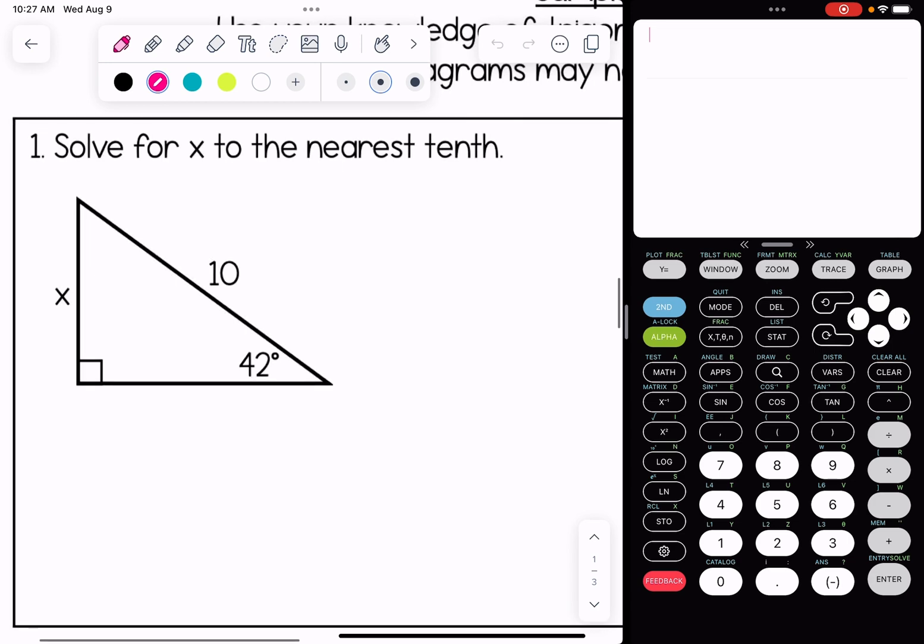Let's take a look at number one. We're going to solve for x to the nearest tenth. The acute angle we have in the picture is 42 degrees, so we're going to be using that as a reference.